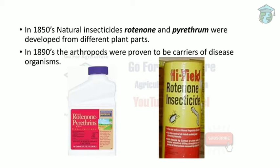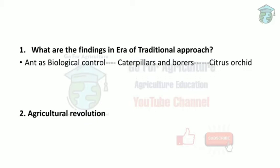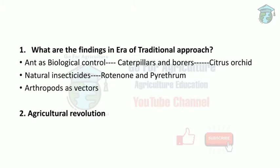The key findings of the traditional approach era are: first, ants as biological control agents; second, natural insecticides rotenone and pyrethrum were developed; third, earthworms were proven to be vectors. This also includes the Agricultural Revolution.